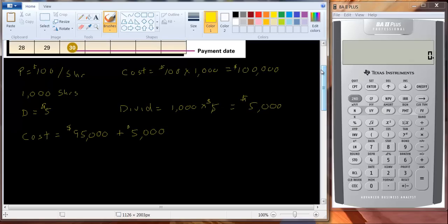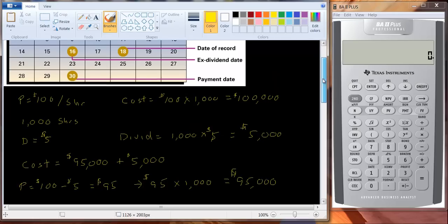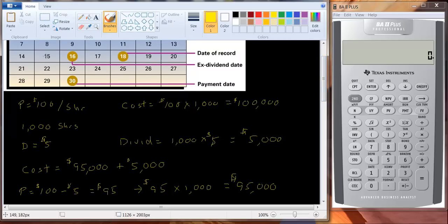Your price will be equal to, essentially, the $100, minus the $5 dividend, because you're not going to receive it. Alright, theoretically, it doesn't fall by exactly $5, because there's tax consequences, but just to keep things simple, you would probably pay $95 a share, and so you would have $95 a share, times 1,000 shares, so you'd have $95,000 worth of stock. Now, suppose you bought it on the 15th, you bought it before it went ex-dividend.